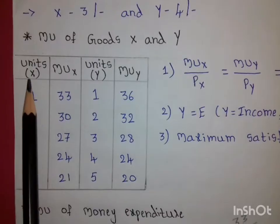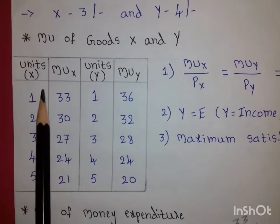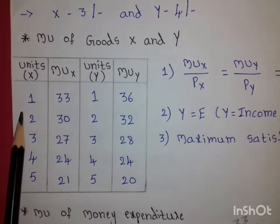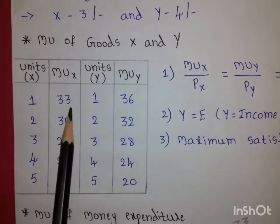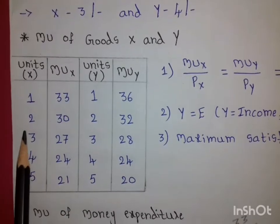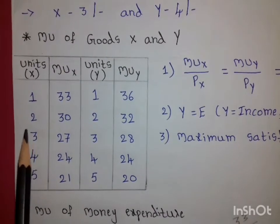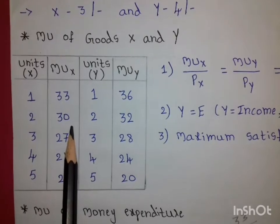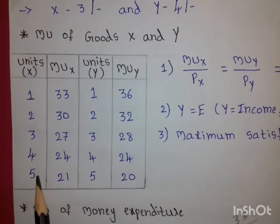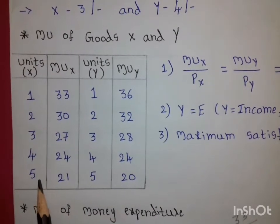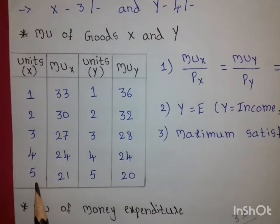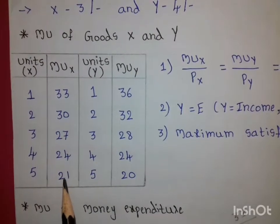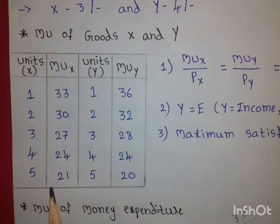This is because, for example, if X is apples, the satisfaction from consuming the first apple is high, and the satisfaction from consuming the second apple is less than the first. As the quantity of apples (good X) increases, the marginal utility decreases.